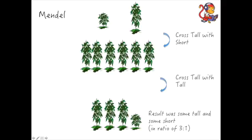So for example, he could have taken these two here, bred them together, and the resulting offspring were in a ratio of three tall to one short. So he was really interested in how it came about that he would get a short plant again when he bred the two tall plants together.